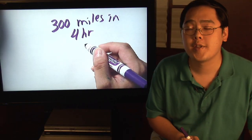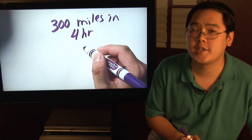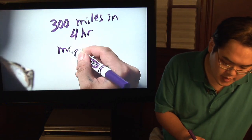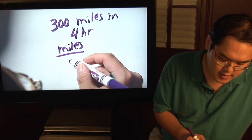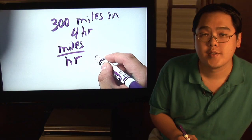Now to figure out the miles per hour that you've driven, simply divide the number of miles that you have driven by how many hours you've been driving.